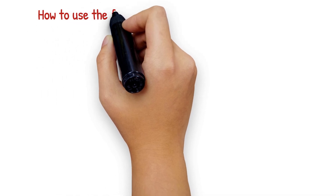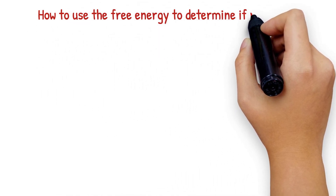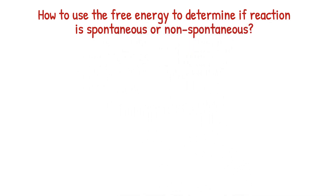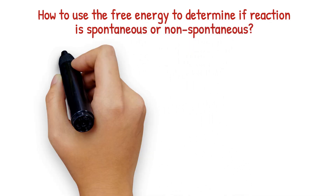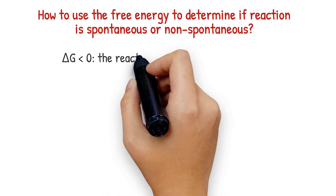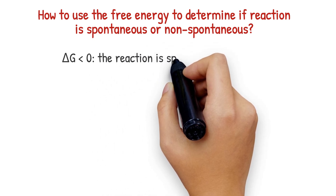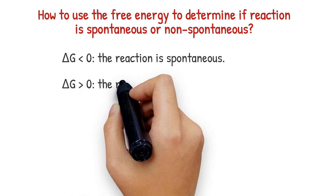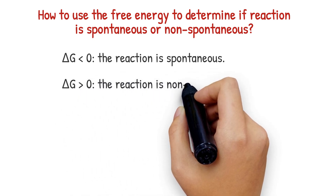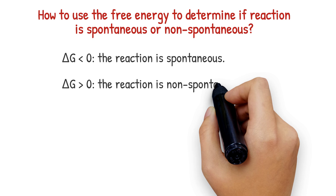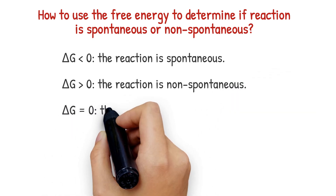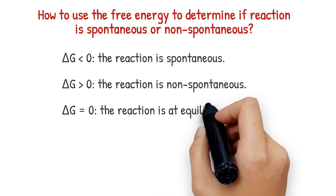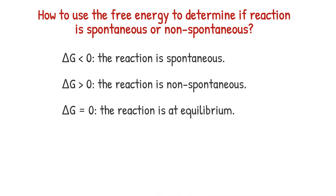How to use free energy to determine if a reaction is spontaneous or non-spontaneous: if the free energy change is negative, the reaction is spontaneous. But if the free energy change is positive, the reaction is non-spontaneous. If the free energy change is equal to zero, the reaction is at equilibrium.